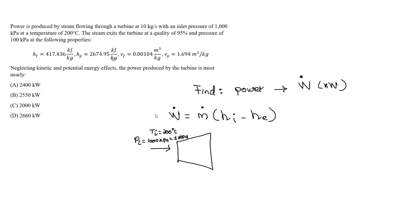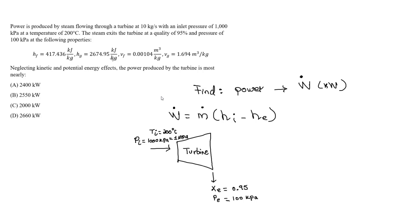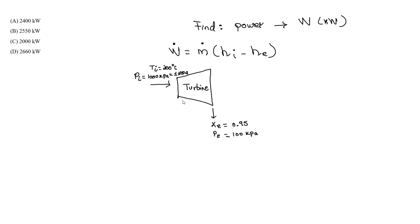At the exit, the steam exits at a quality of 0.95 and a pressure of 100 kPa. So these are the conditions of our turbine. What we need are H-inlet and H-exit. The mass flow rate is given as 10 kilograms per second. Let's find the enthalpy at the inlet.